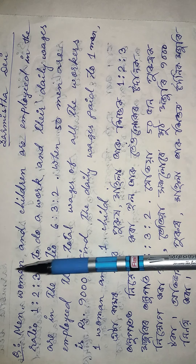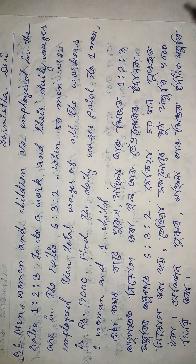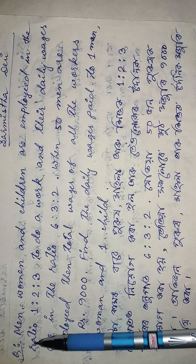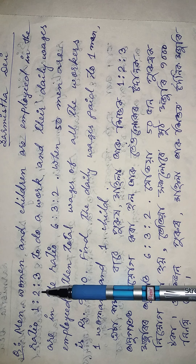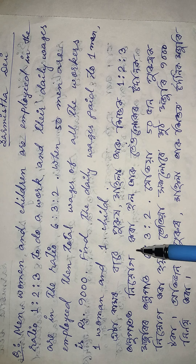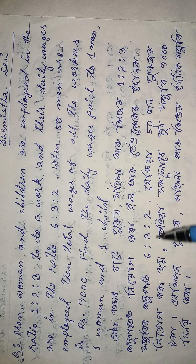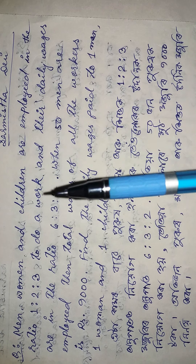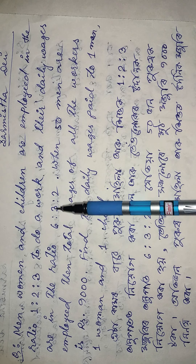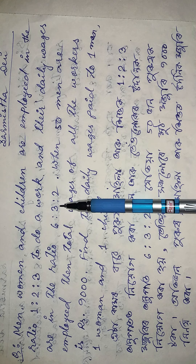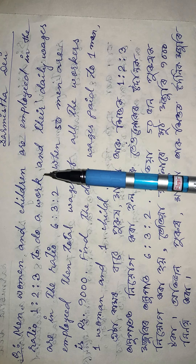In this work, three categories of employees are employed. The ratio of them is 1:2:3. That means if one man is employed, the number of women will be 2 and the number of children will be 3. The daily wages of them are in the ratio 6:3:2 — that means if a man gets Rs. 6, a woman gets Rs. 3, and a child gets Rs. 2.